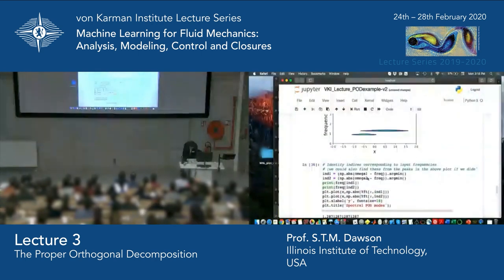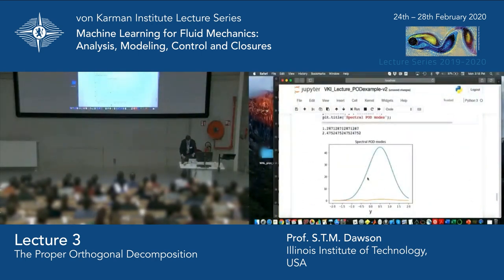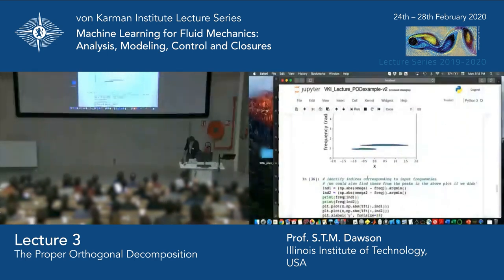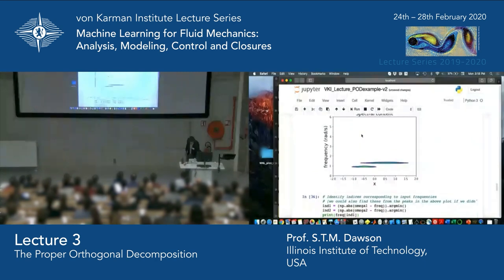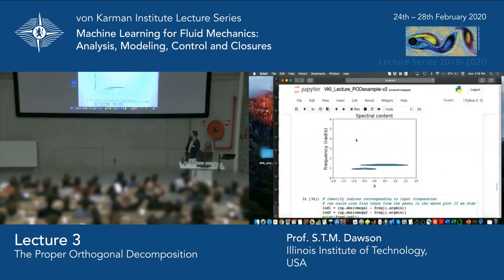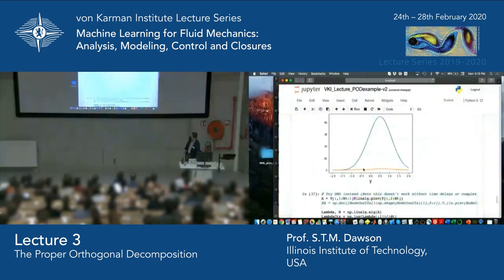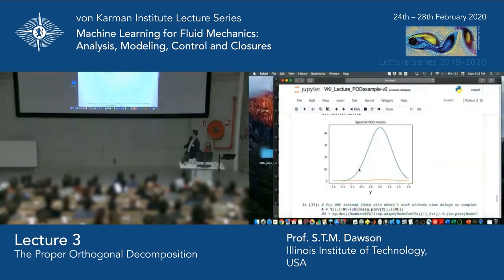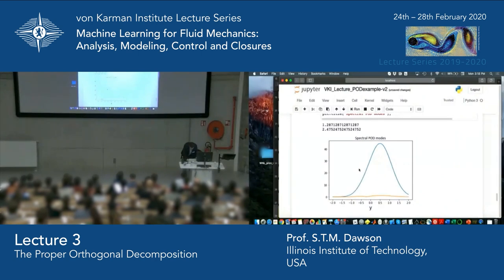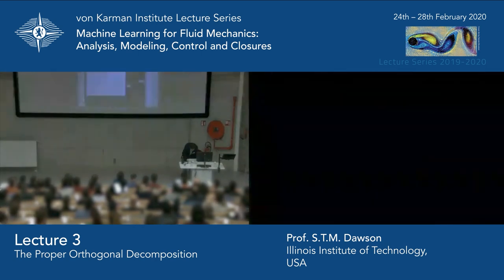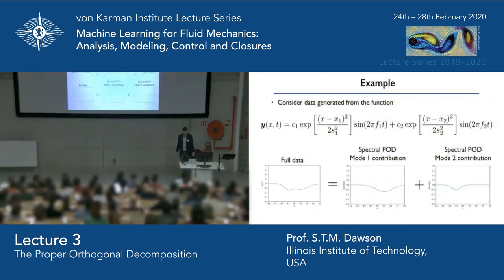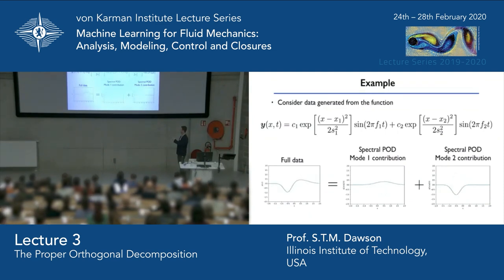If I reduce the data further, the spectral POD breaks — the time step chosen is too large to resolve the frequency of one of the modes, so even though we get an approximate location, the mode itself becomes vanishingly small. There are more restrictions here than with standard POD. But with the full data, we can actually recover frequency-localized modes corresponding to each dynamical feature in the data.